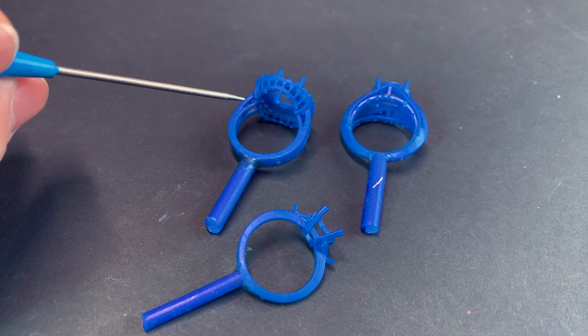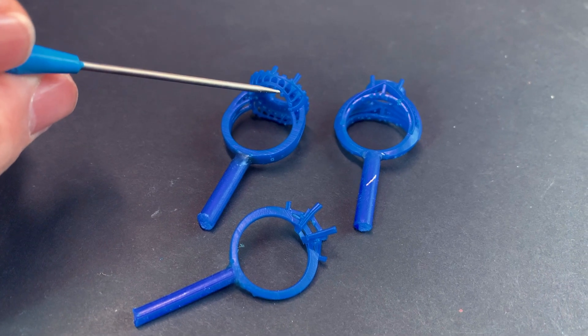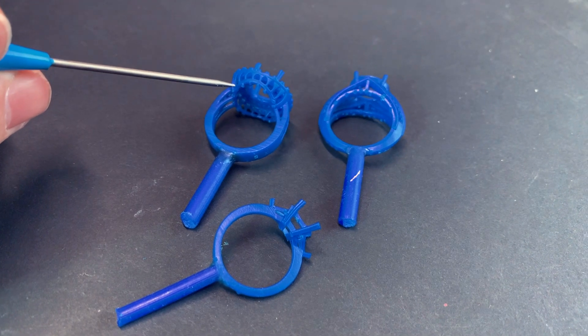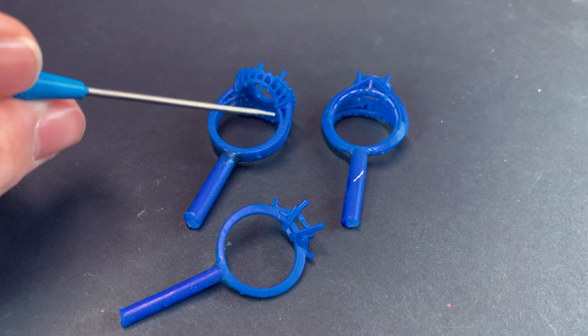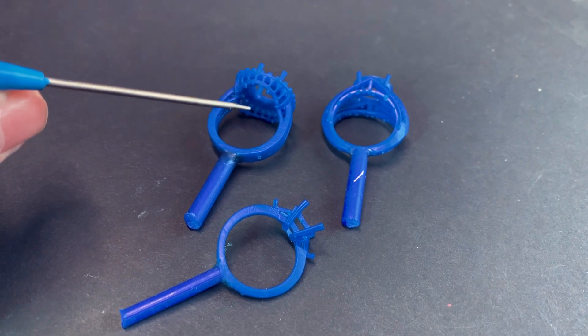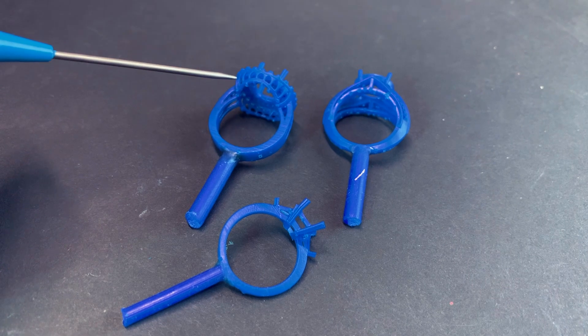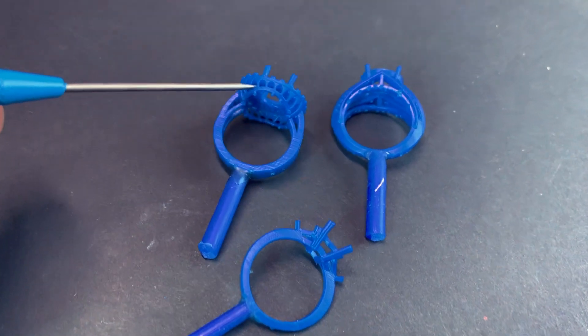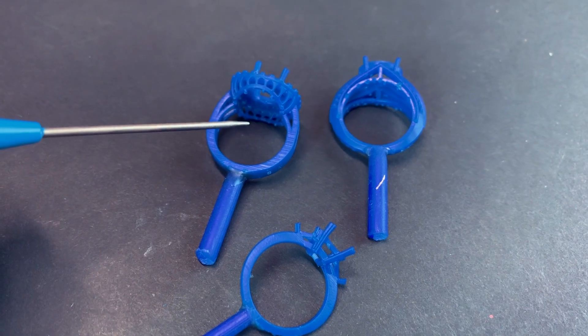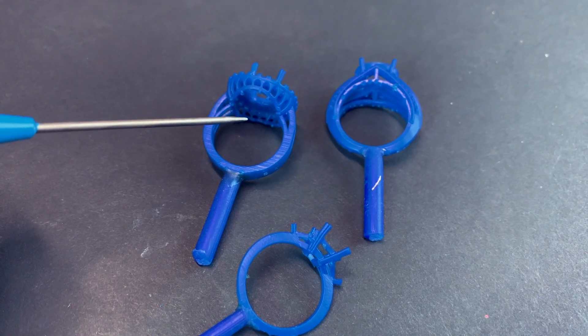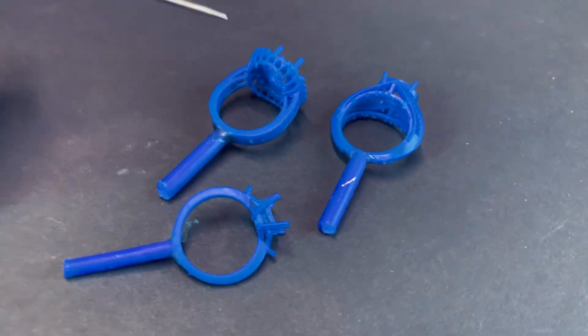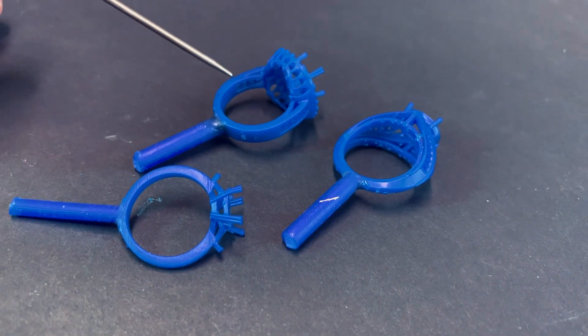Number two, it can be difficult to remove supports on delicate models, like this gallery work here, so take your time. One idea is possibly even grow a second one of these if you have the capacity or the time, because when you're removing these supports, it's easy to snap or break things. Another idea is to put these models into the cure for 30 minutes, but without any heat. That will stiffen them up just a little bit, maybe make them a little stronger when you're removing supports.